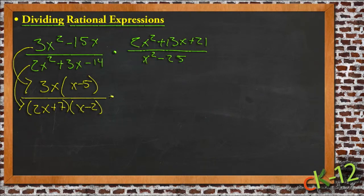Then we'll just multiply that straight across. And this one, top expression here, factors as 2x plus 7 times x plus 3.